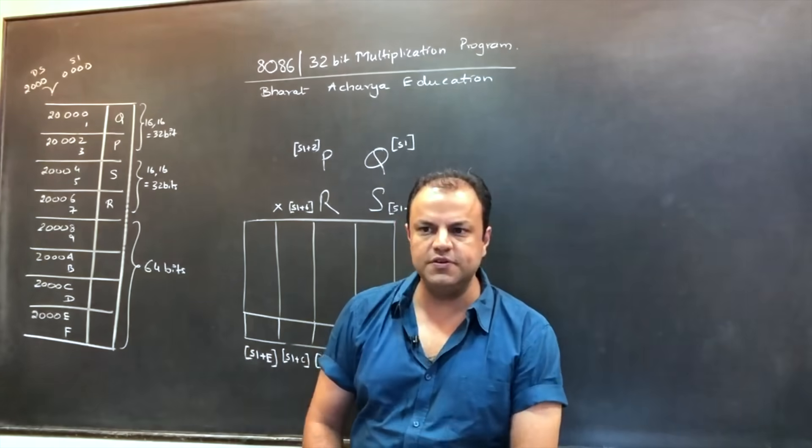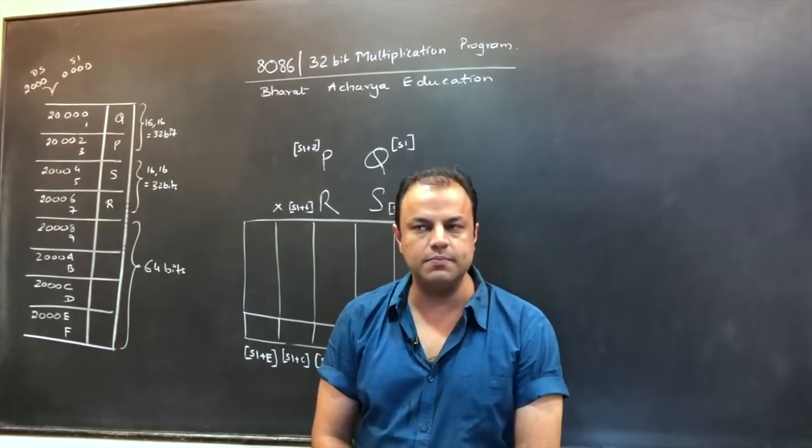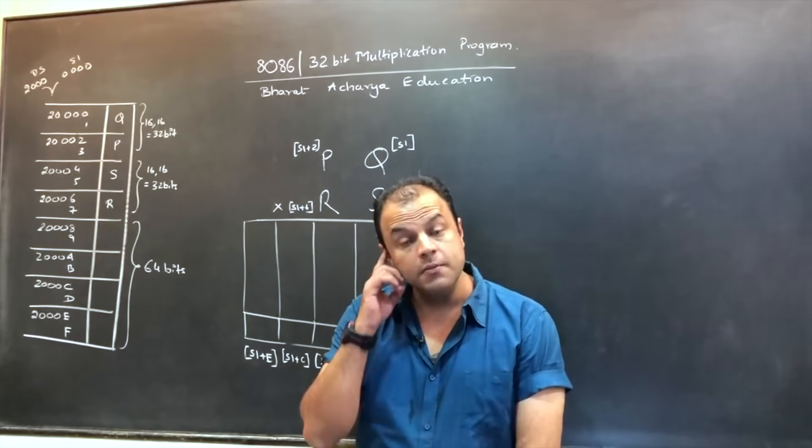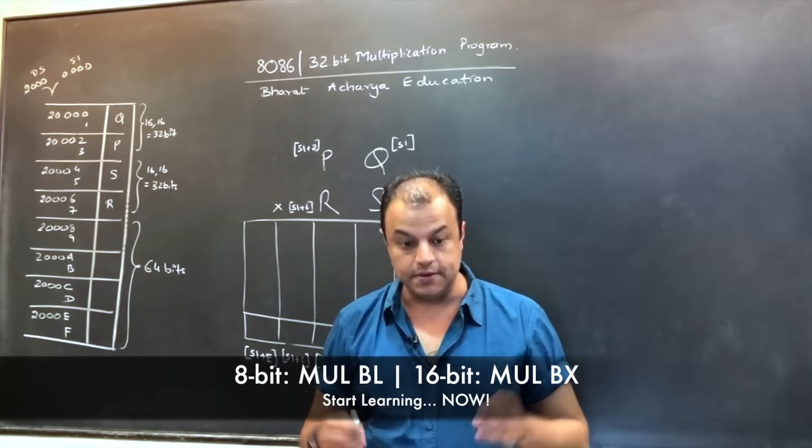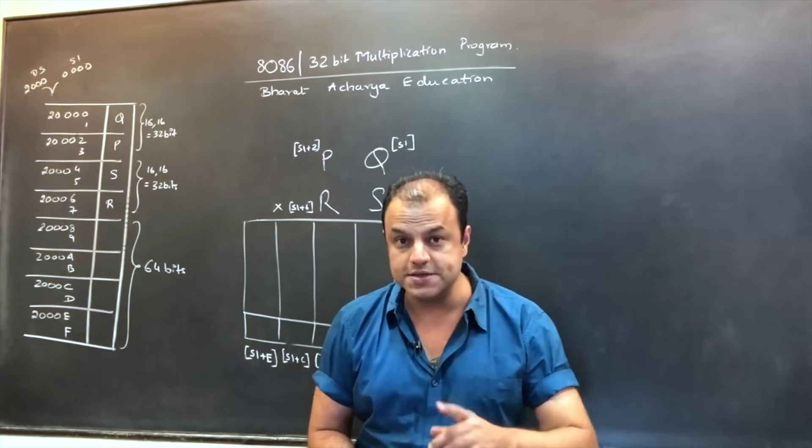Why do we need a program? Students say, sir, we have a MUL instruction. Why can't we directly multiply? Of course, we have a MUL instruction, but that multiplication is either 8-bit or you can do 16-bit multiplication. Keep in mind, 8086 is only a 16-bit processor.